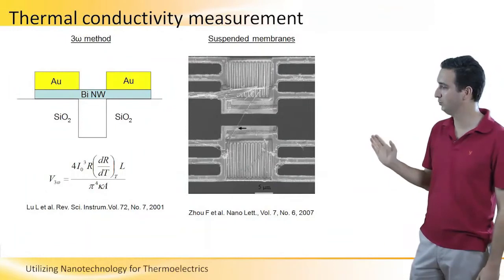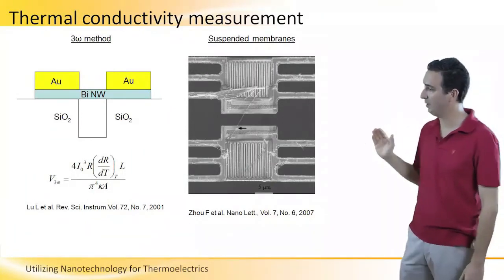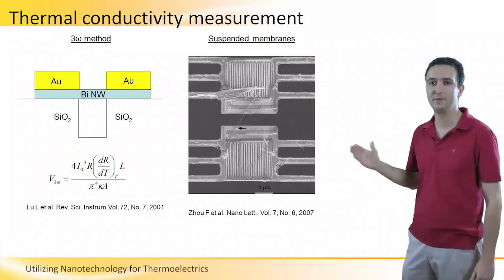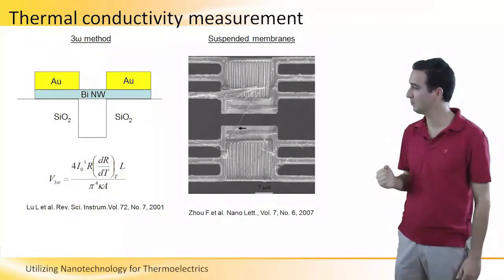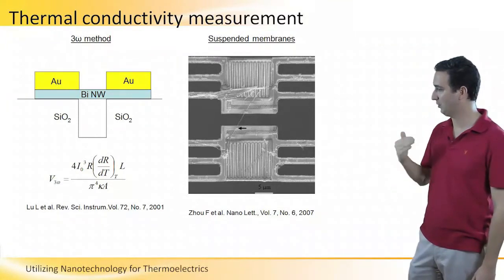So what you do is you apply an alternating current through the nanowire with a frequency of 1 Omega. This alternating current,